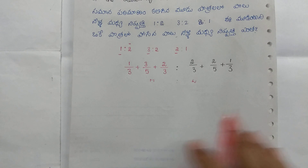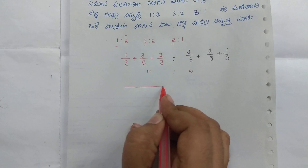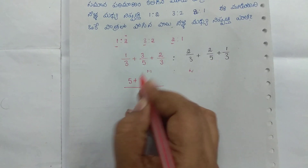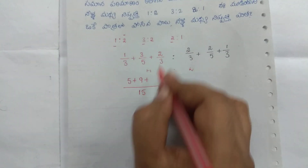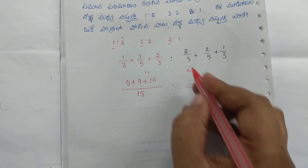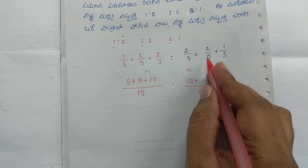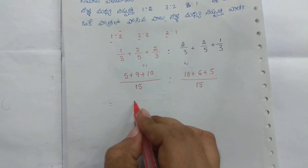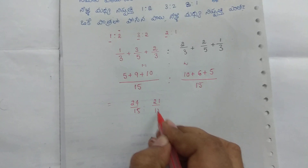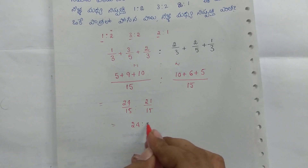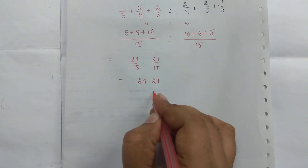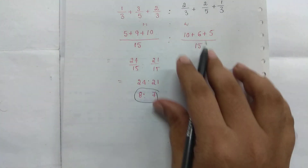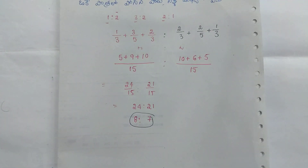We make the answer using LCM. LCM of 3 and 5 is 15. We cancel the ratio and get 24 is to 21. So this cancels to the ratio of 8 is to 7. The final answer is 8 is to 7. So the ratio of 24 is to 21 simplifies to 8 is to 7.